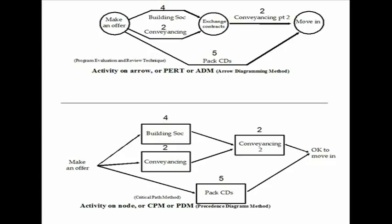The real difference is that PERT is concerned with events, whereas CPM is concerned with activities. So with PERT, you have events drawn as circles, and they are connected by arrows. The arrows are the activities — the arrows are what take the time, a bit like driving between cities. Whereas with CPM, it's about the activities, so you put the times on the boxes, not on the arrows.